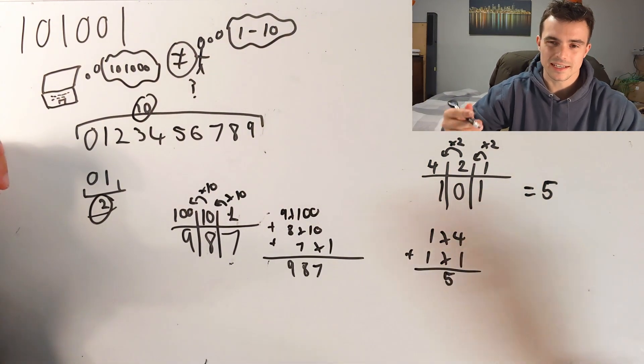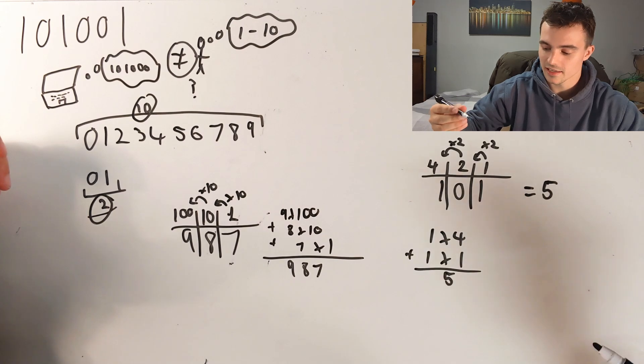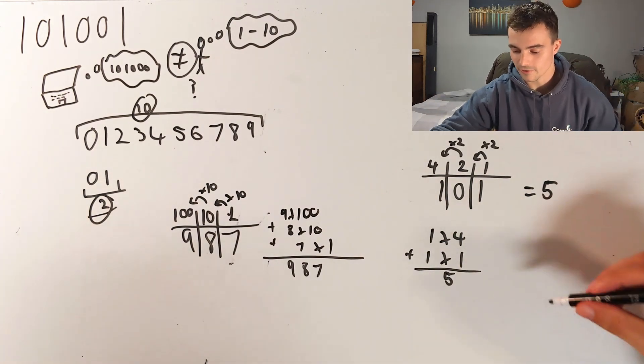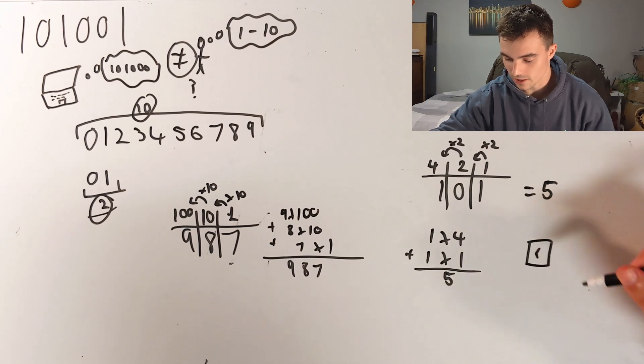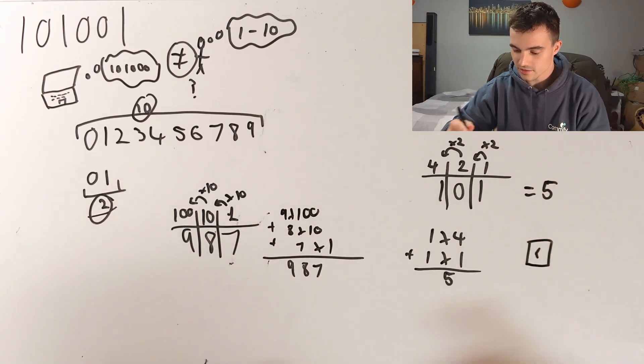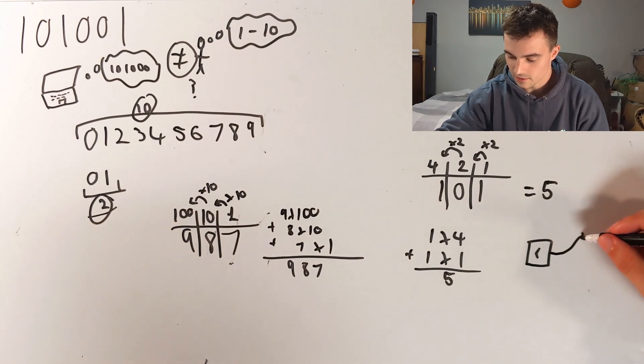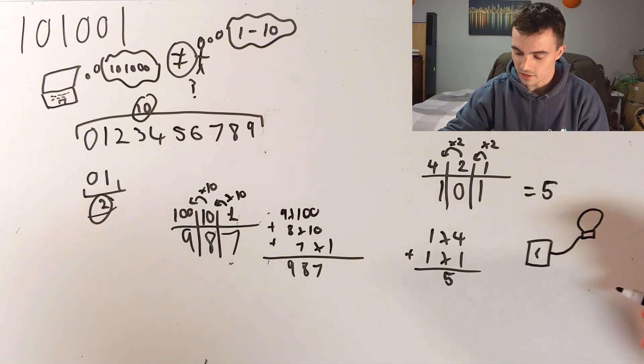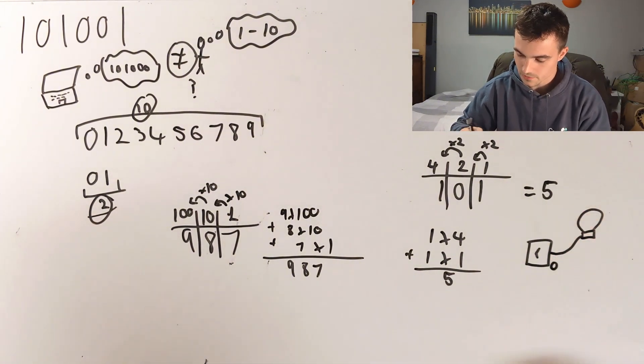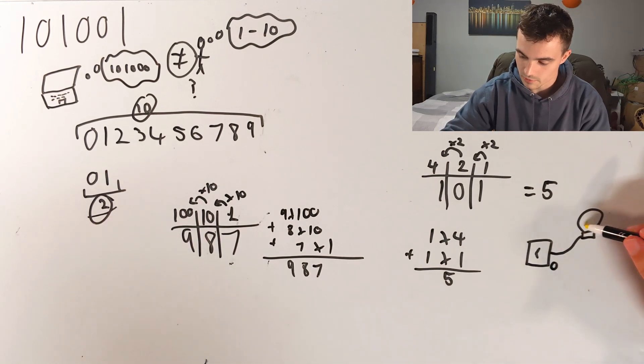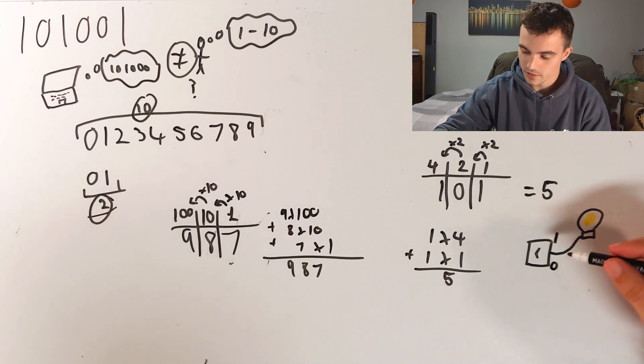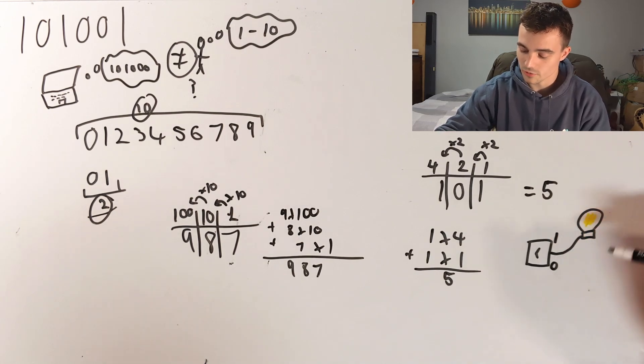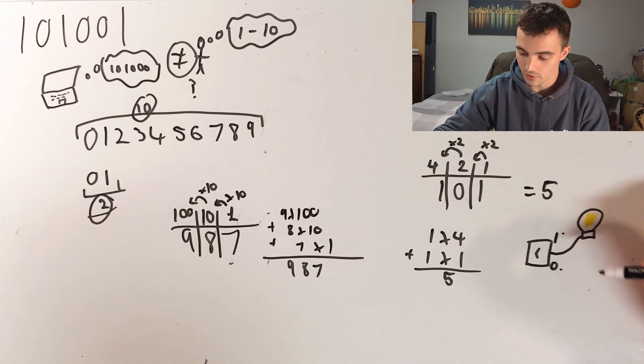You can think of this a bit like, imagine I have a lightbulb. Imagine I have a light switch and I have a lightbulb. This lightbulb can be off, which is zero, or it can be on, which is one. This has two combinations: off and on.